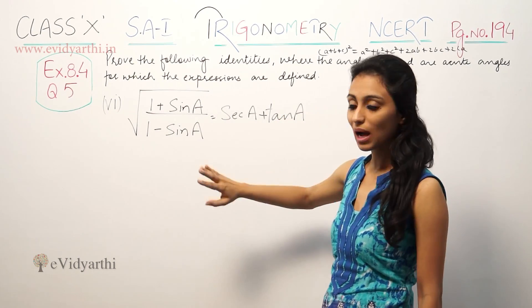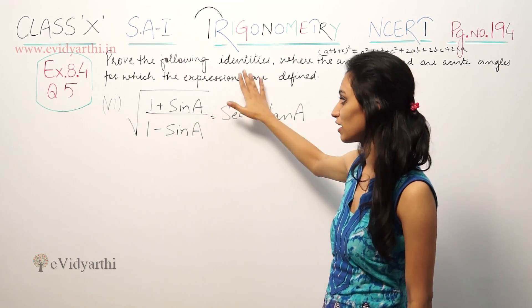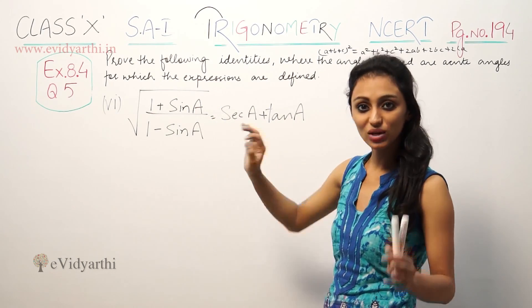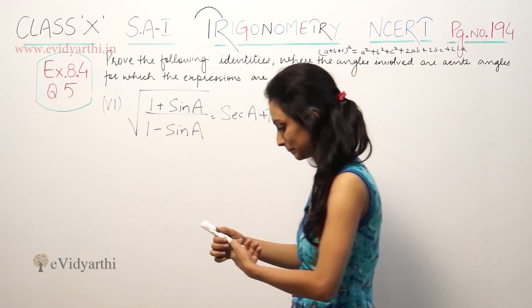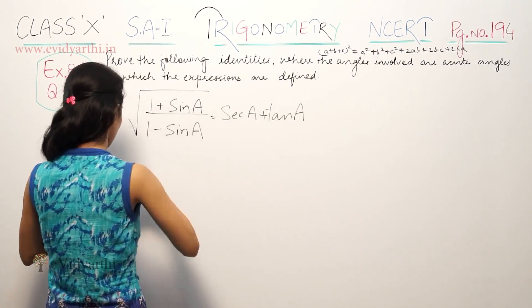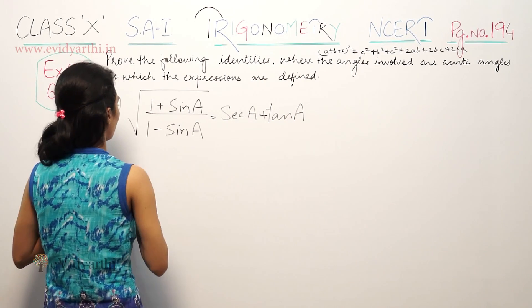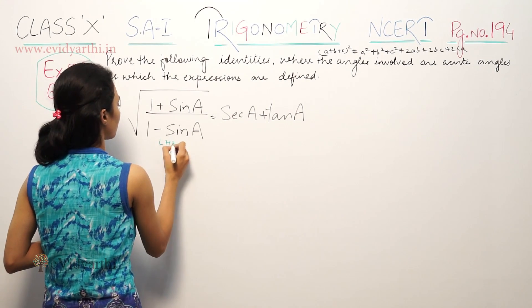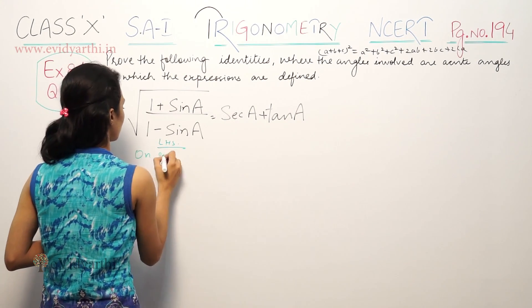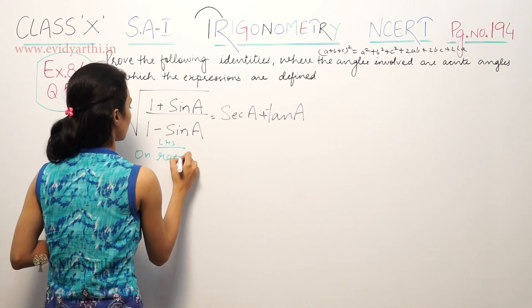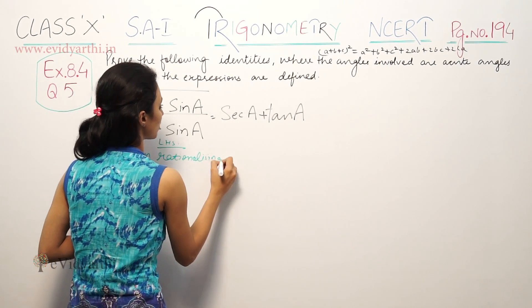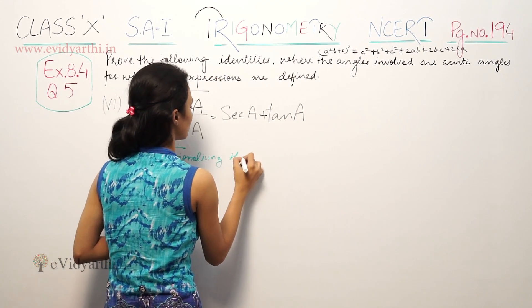So whenever you have roots given in a fraction, you need to rationalize it. So on rationalizing, we build up the denominator.